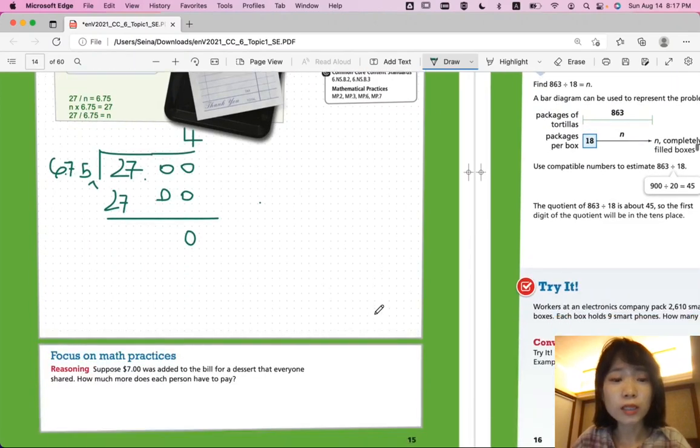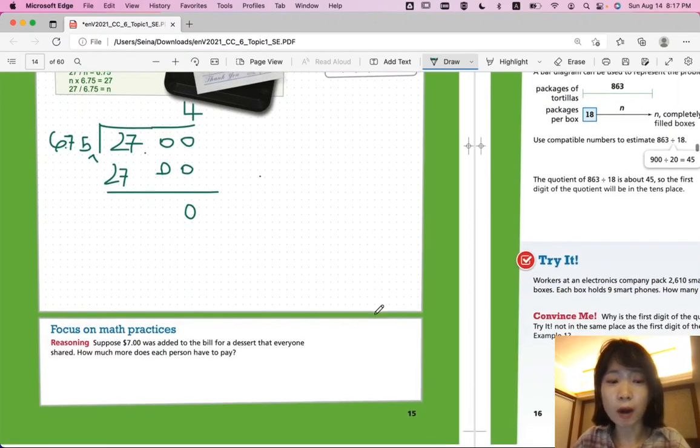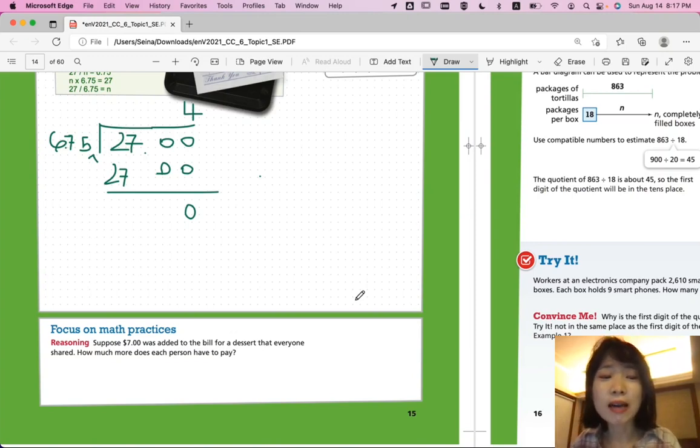Let's look at focus on math practices on the bottom. Suppose $7 was added to the bill for dessert that everyone shared. How much more does each person have to pay? So, we're going to add a dessert. We decided to add a brownie or something, right? And so, everyone is going to share, which means everyone will also equally pay for that dessert.